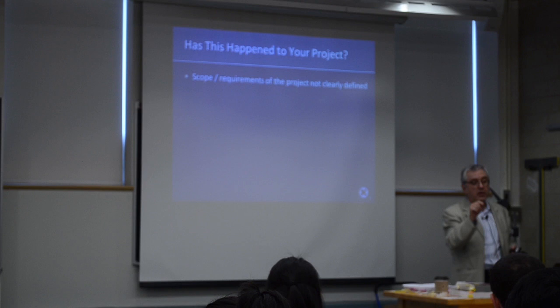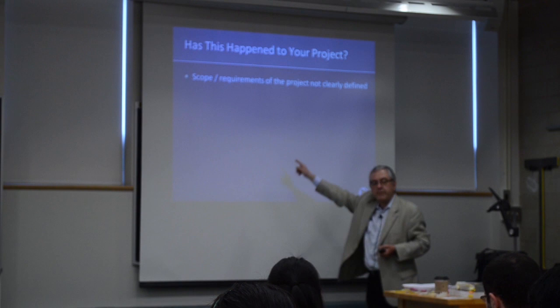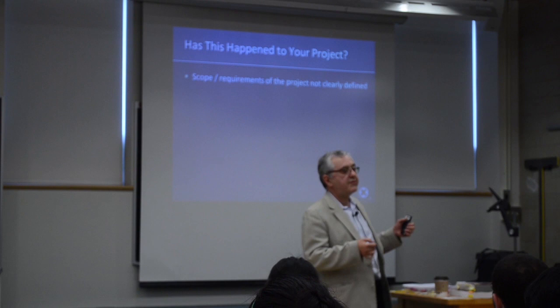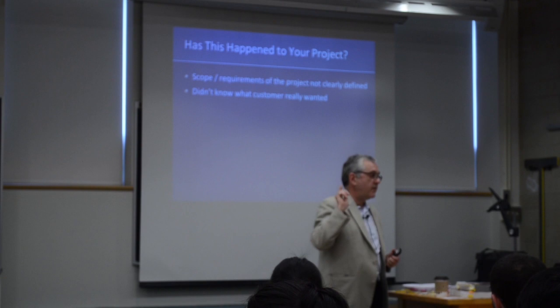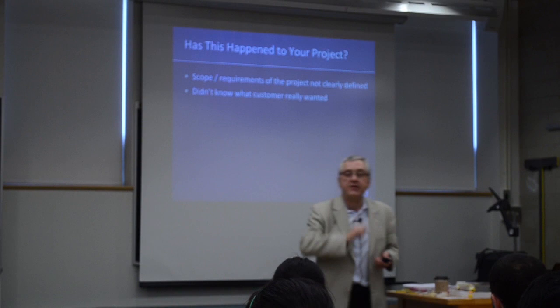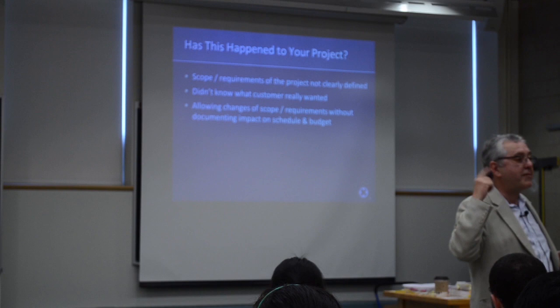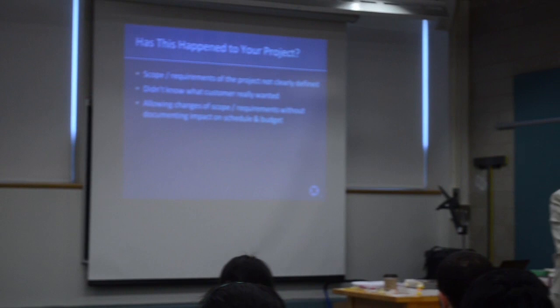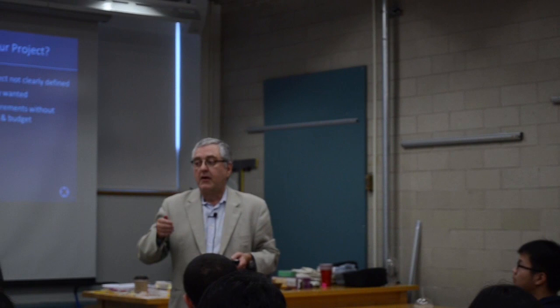Some common project management problems: the scope or requirements of the project were not clearly defined — this happens distressingly often. We didn't know what the customer actually wanted, or the customer didn't know what they wanted. Because of that, we allow scope to change without identifying the impact on cost and schedule. I'm going to illustrate this with a somewhat amusing video clip.